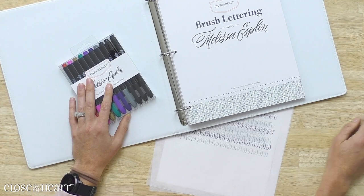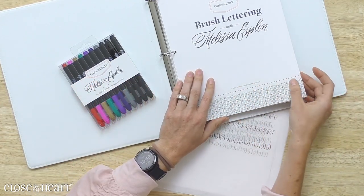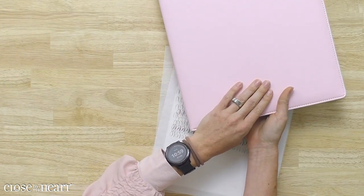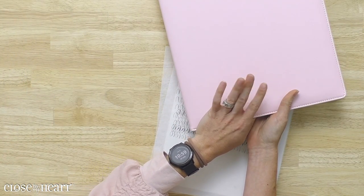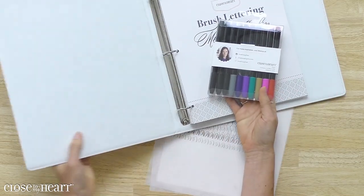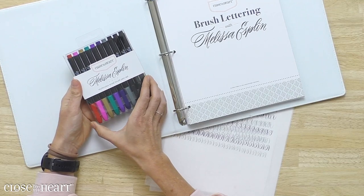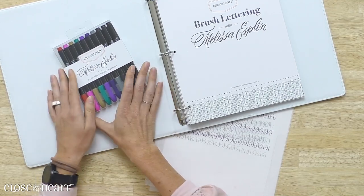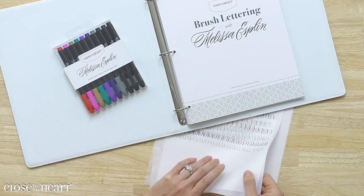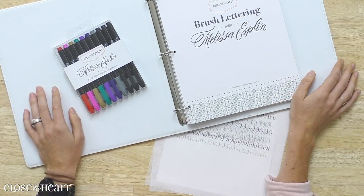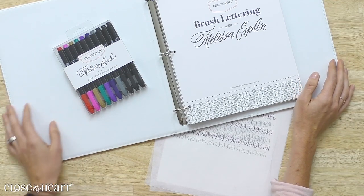In this video, we'll be using the Brush Lettering with Melissa Esplin book that's inside an everyday life album. This is the 8½ by 11 album in Ballerina. It also comes in gray. We'll also be using the Close to My Heart Melissa Esplin multicolor small brush pen set and tracing paper. You'll also need paper clips and some paper that you have on hand so we can do a project together.